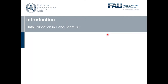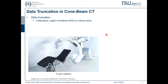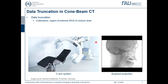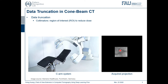Let me introduce data truncation in cone beam CT. The problem of data truncation arises in two scenarios. The first scenario is that in certain clinical applications, only a certain region is of interest. For example, if we want to deploy a stent to a certain artery or get tissue samples with biopsy, some X-ray collimators will be placed between the X-ray source and the detector to reduce dose. If we are only interested in the area near the ear, inside a red box, then with the collimator, only this region is acquired and the projections are truncated in the horizontal direction.